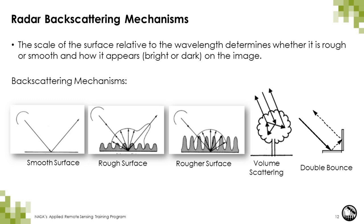Volume scattering refers to radar energy being scattered within a volume or medium, usually consisting of multiple bounces and reflections — whether in a vegetation canopy, a snowpack, or the soil. The final mechanism is double bounce, which occurs when two smooth surfaces form a right angle facing the radar beam. The beam bounces twice off the surfaces and most of the radar energy is reflected back to the sensor. Double bounce is commonly seen in urban areas and in areas where there is flooded vegetation.